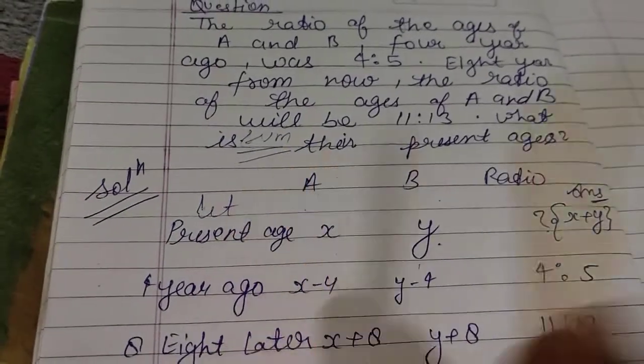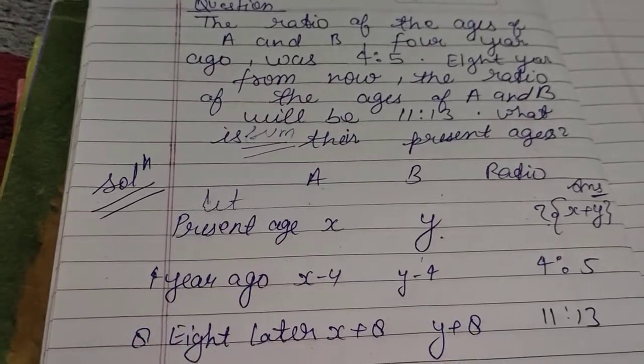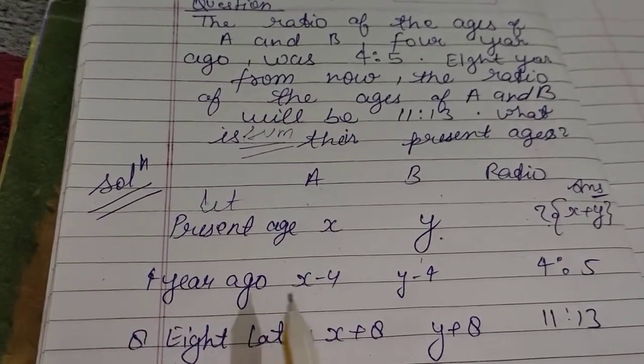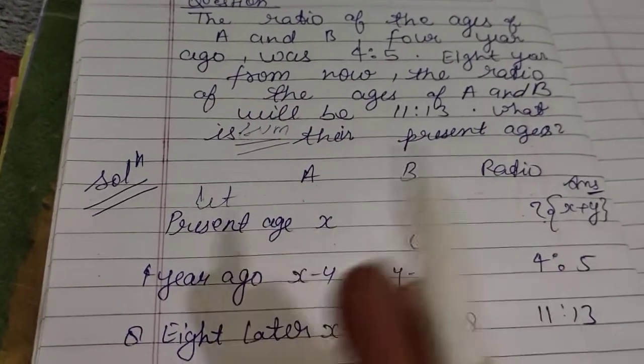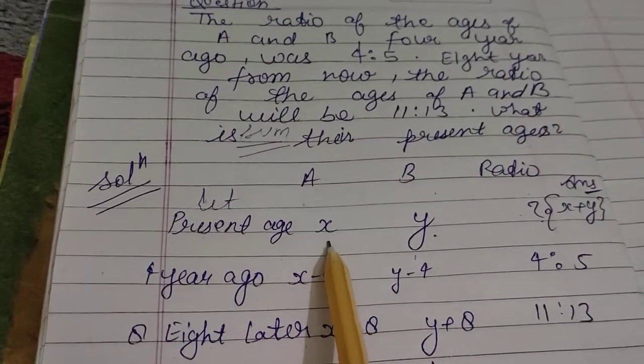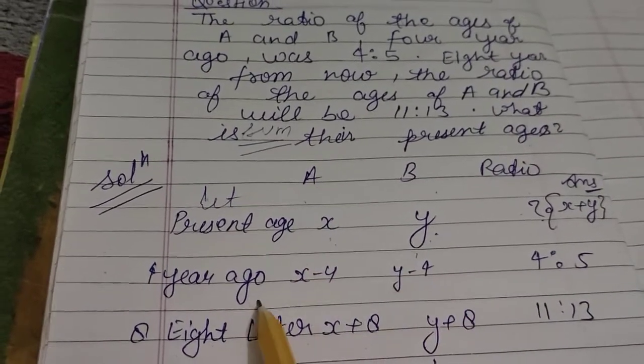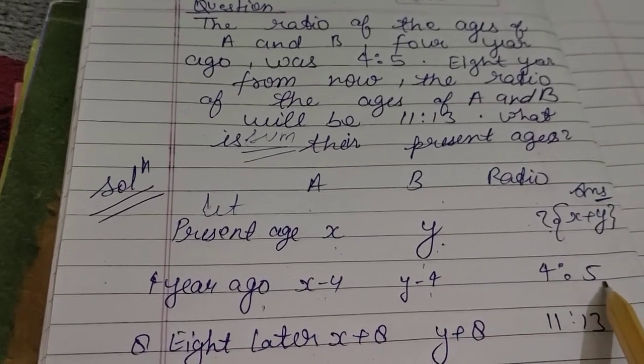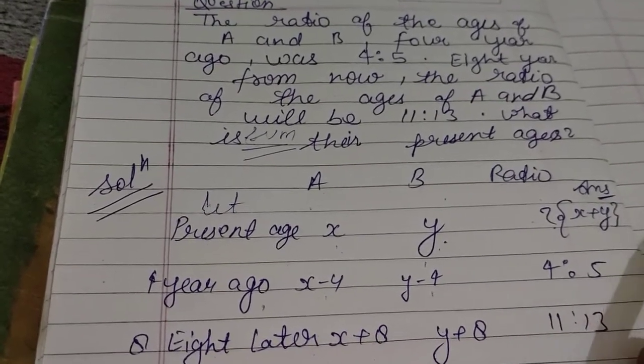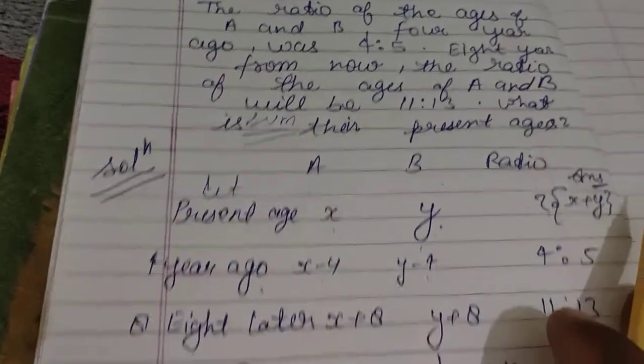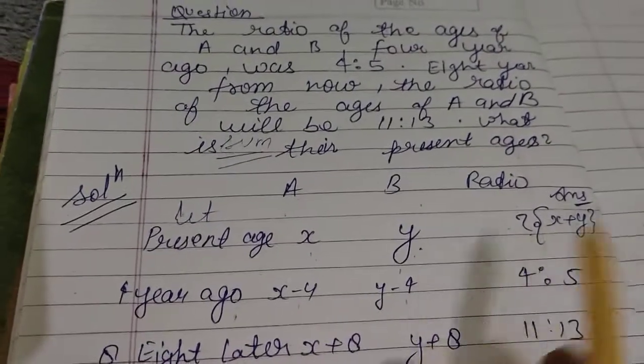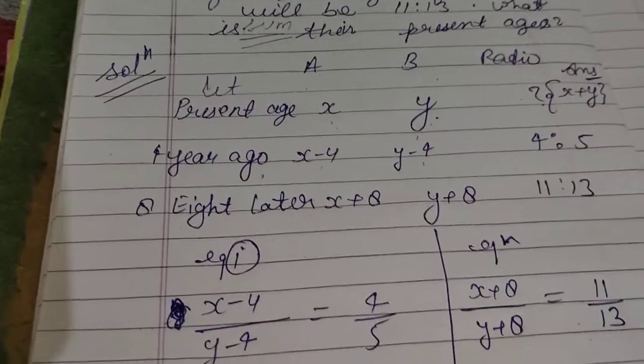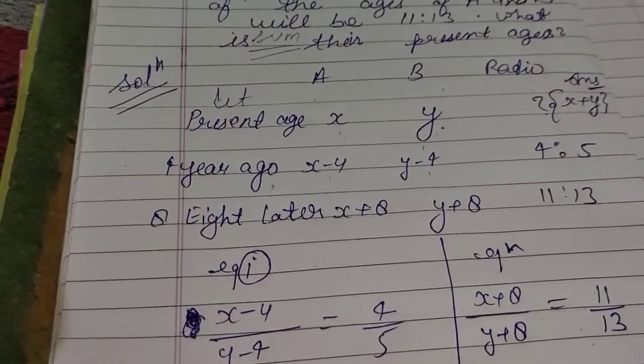Now, what was the ratio of their ages four years ago? Four years ago, their ages were x-4 and y-4. So we can write the equation: (x-4)/(y-4) = 4/5.